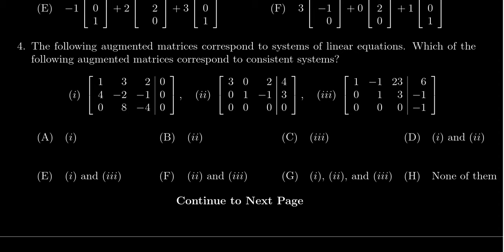If we look at choice I, choice number one there, that matrix is not in echelon form, but I can also notice that this matrix is homogeneous. Every homogeneous system is consistent.